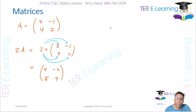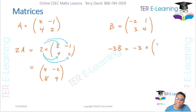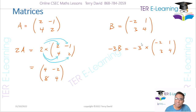Now, what if I have B = [-2, 1; 3, 4] and this time I want to work out -3B? Again, that's a scalar multiplication — it's -3 multiplied by the matrix B, which is [-2, 1; 3, 4].